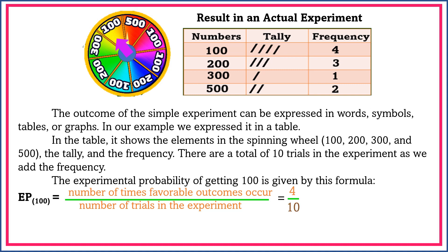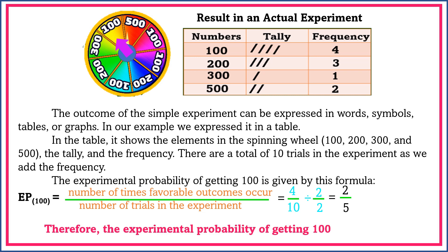So, 4 over 10 can be reduced to its lowest term by dividing both numerator and denominator by 2. So, 4 divided by 2 is equal to 2, and 10 divided by 2 is equal to 5. Therefore, the experimental probability of getting 100 is 2 fifths.